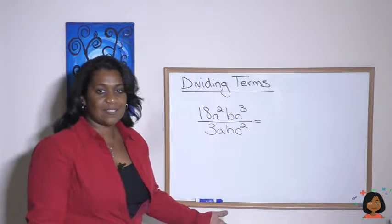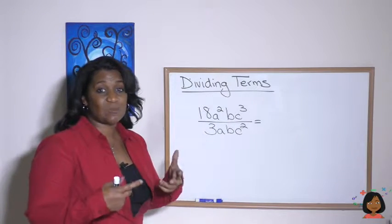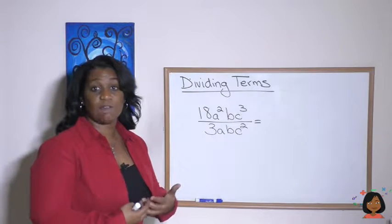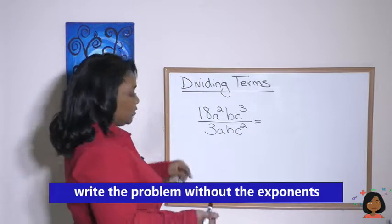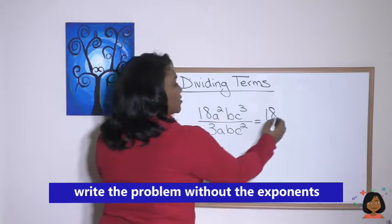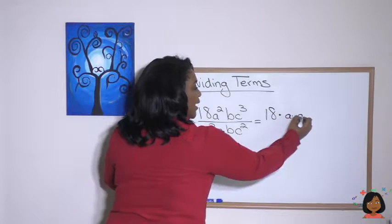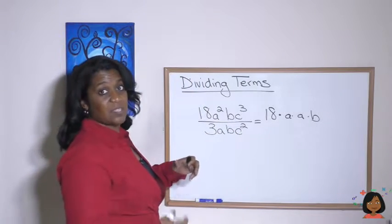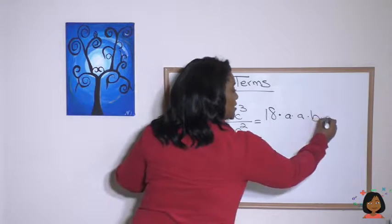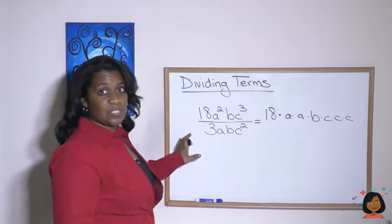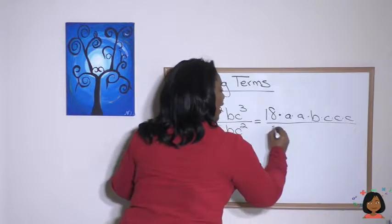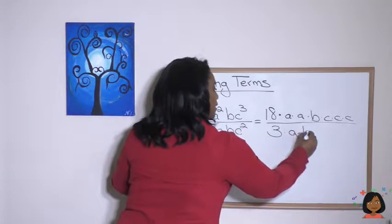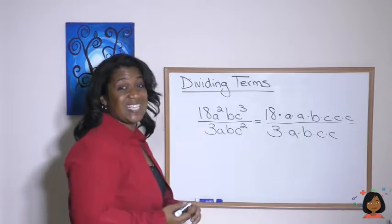What do we do to simplify this? We have to remember what an exponent means — it means that number or variable multiplied by itself. So let's write it like that. 18 a squared means a times a, times b, times c to the third means c times c times c. Let's do the same thing on the bottom: 3 times a, times b, times c squared, so c times c.